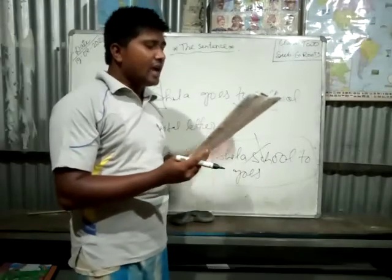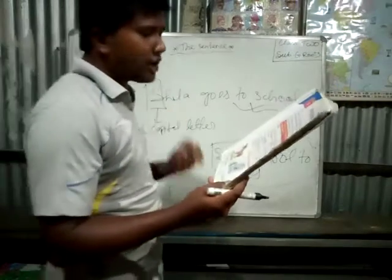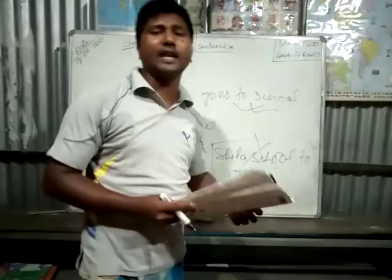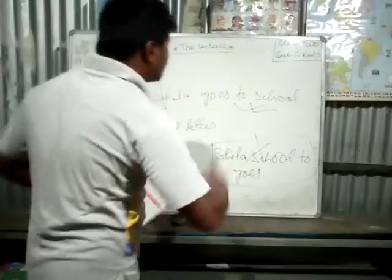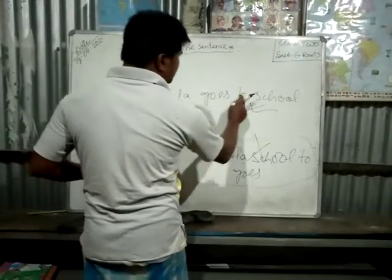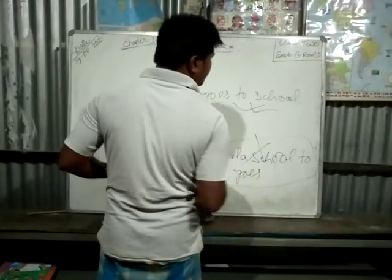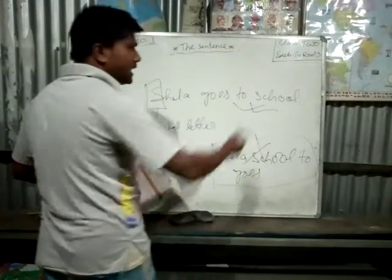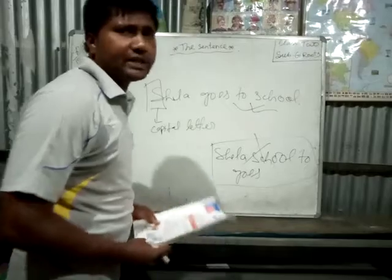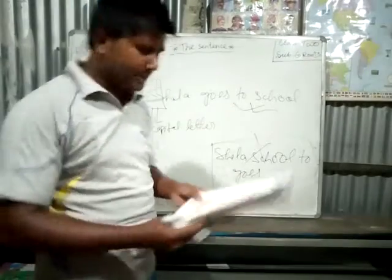The third rule: a full stop must be placed at the end of every sentence. So 'Sheila goes to school.' — I have given a full stop. After the ending of a sentence, you should give a full stop.